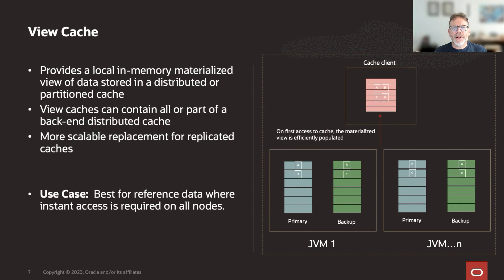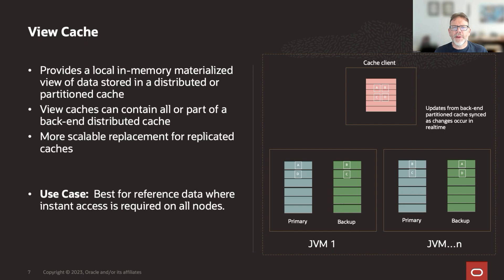A view cache is a clustered or fault-tolerant cache that provides an in-memory materialized view of data stored in a distributed or partitioned cache. View caches replace replicated caches, which are now deprecated, and maintain an up-to-date view of the data on the client. View caches can contain all or part of a back-end distributed cache. This cache type is best for reference data where instant access is required on all nodes.